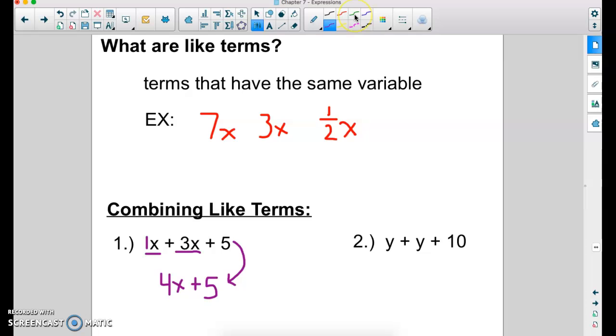In number two, I have y plus y plus 10. I see one y. I see two y's. Those are my like terms. y plus y is 2y. And I can't add a y with a 10. So I just leave it 2y plus 10. That is my simplified expression.